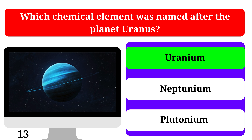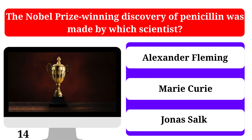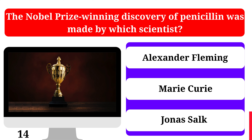The Nobel Prize-winning discovery of penicillin was made by which scientist? Alexander Fleming, Marie Curie, or Jonas Salk. The correct answer is Alexander Fleming.